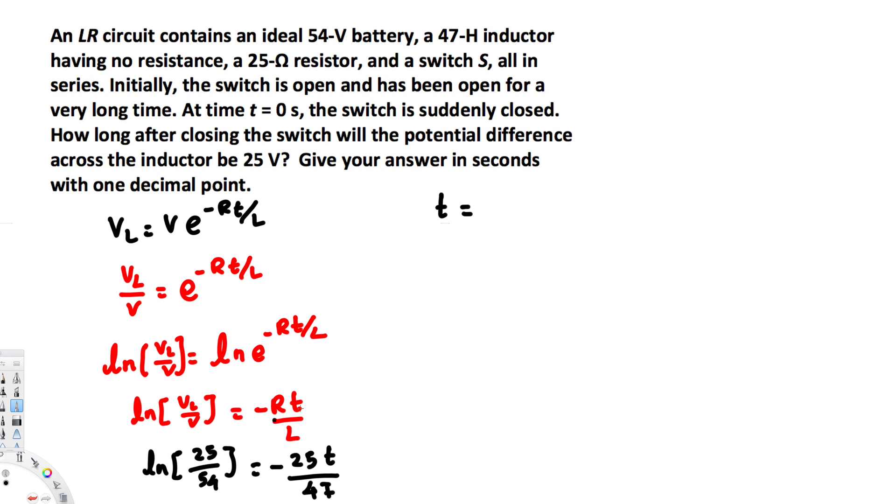From that one, this negative and negative cancels each other, and if you calculate this ln value, you will get negative 0.77, and you multiply this one with 47 and divide this one with negative 25.